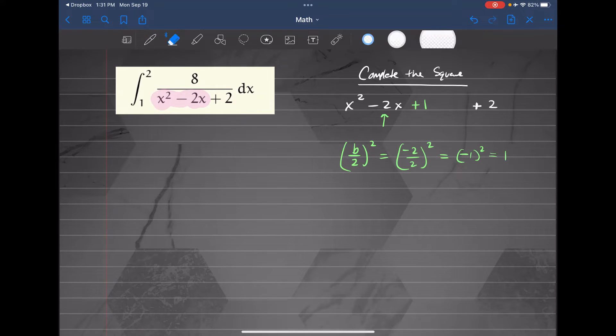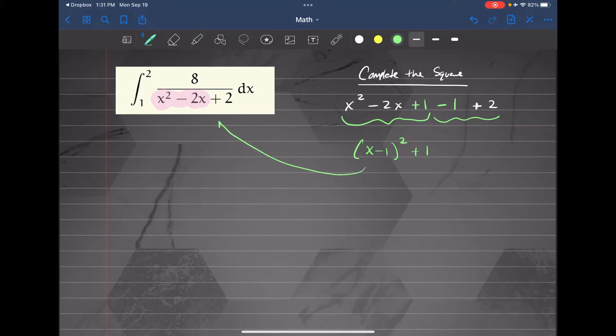But I don't want to change the problem because then it wouldn't make sense. So I also want to subtract 1 at the same time. So I have finished adding and subtracting the term I wanted. Now these 3 can be factored. That factored into x minus 1 squared. And these 2 right here, they're just constant. Add them up, negative 1 plus 2, that's plus 1. That's where I'm going to replace right here. So I didn't change the question. I just changed the look of it so we know how to integrate.